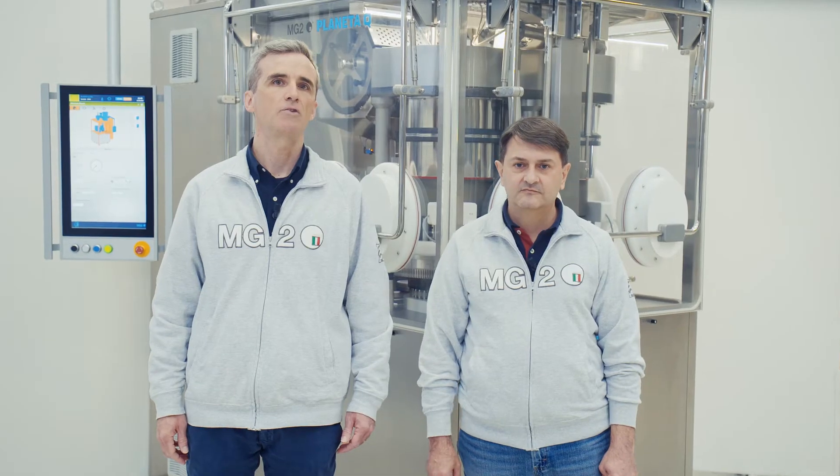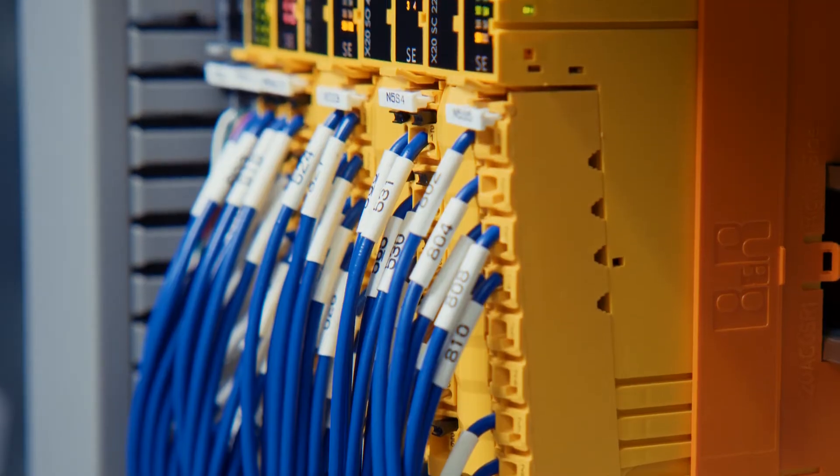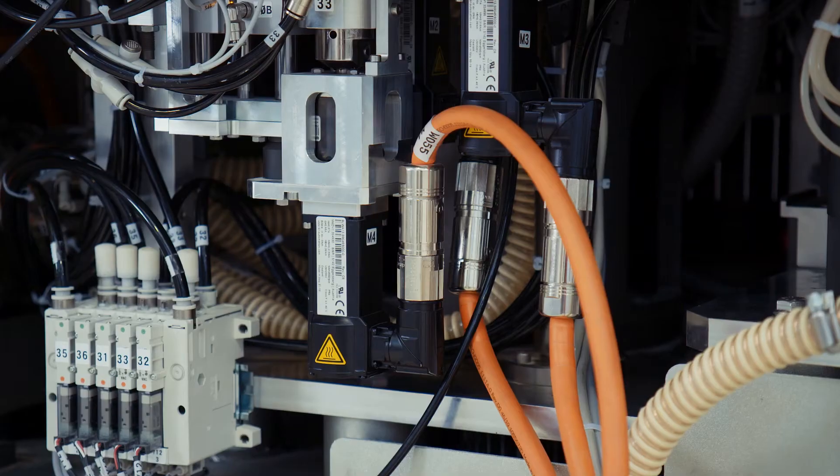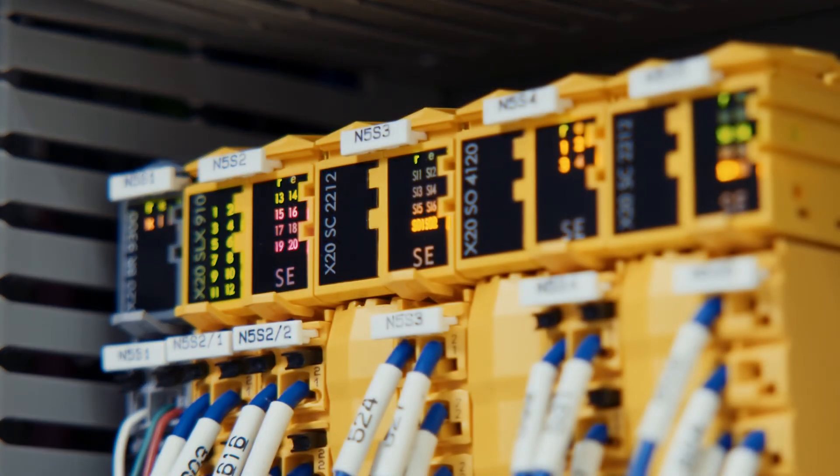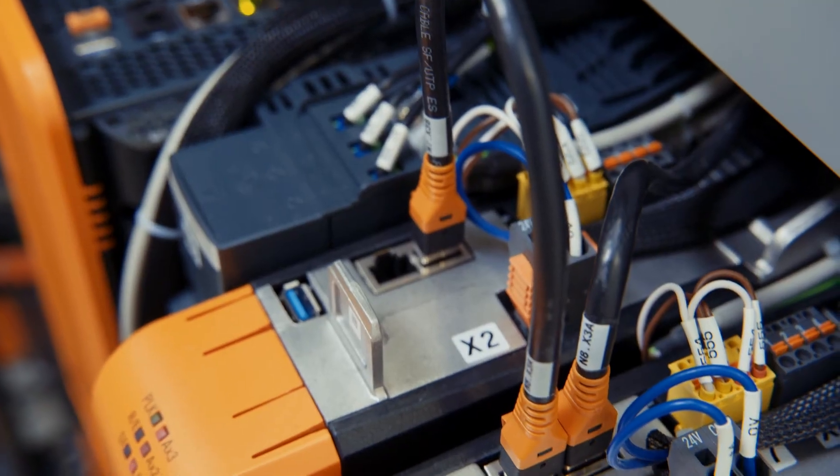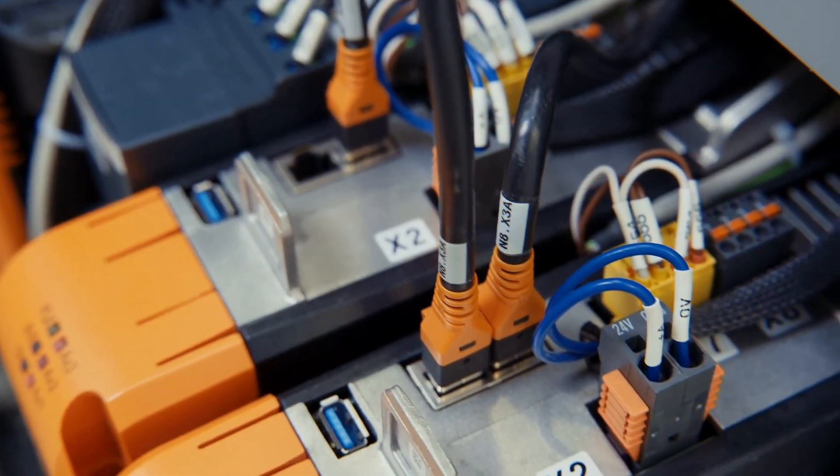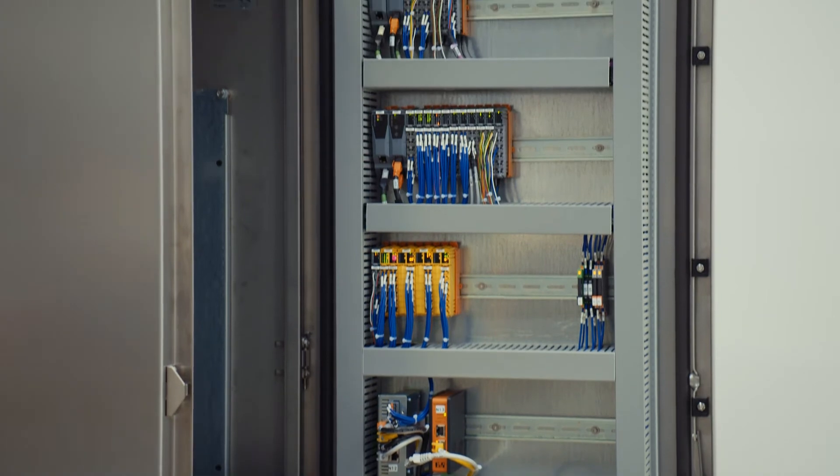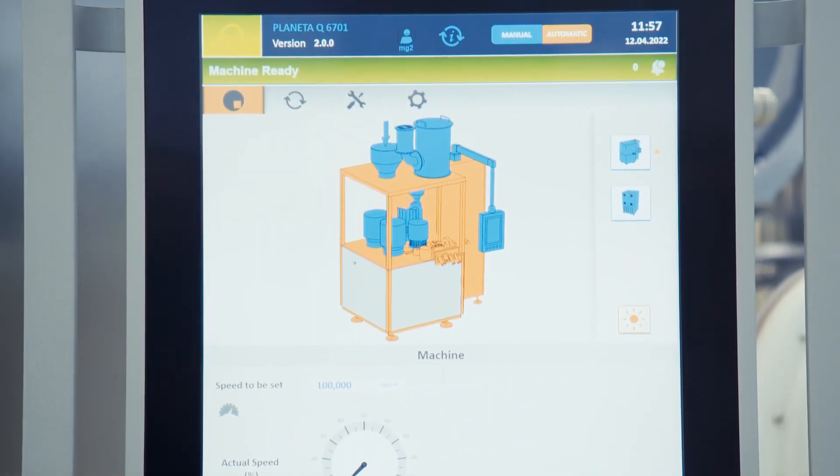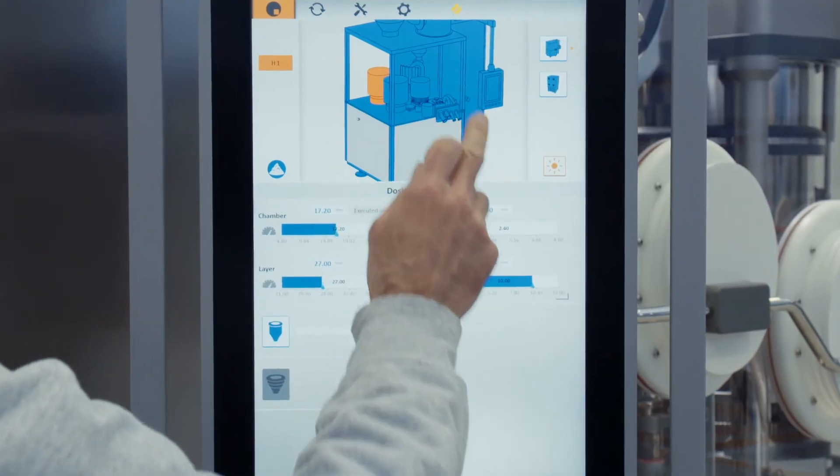Planeta Q automation is fully integrated thanks to B&R technology: Motion, Machine control, HMI interface, Weight control, Quality report 21 CFR Part 11, Production statistics, Industry 4.0 connectivity based on the industrial OPC UA in one unique B&R software platform, Automation Studio, using web-based HMI, MapView and Map Technology.